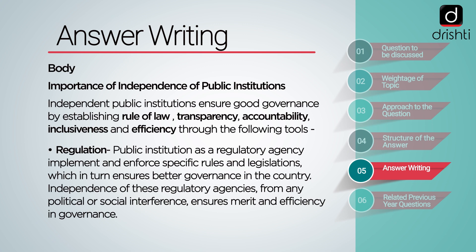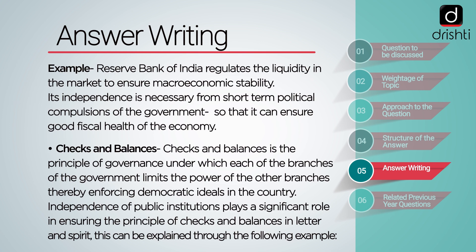Importance of independence of public institutions. Independent public institutions ensure good governance by establishing rule of law, transparency, accountability, inclusiveness and efficiency. Regulation: Public institutions as regulatory agencies implement and enforce specific rules and legislations, which ensure better governance. Independence of these regulatory agencies from any political or social interference ensures merit and efficiency. For example, the Reserve Bank of India regulates liquidity in the market to ensure macroeconomic stability. Its independence is necessary from the short-term political compulsions of the government so that it can ensure good fiscal health of the economy.